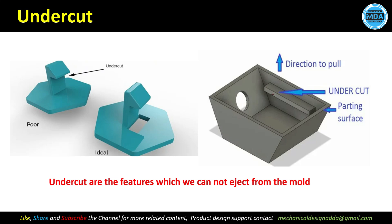This part has a feature called an undercut. In the pulling direction, this is the direction of the mold and this is the hub direction of the mold. This material will get stuck during ejection, making it difficult to remove from the mold. Even after applying a draft, we can't remove this surface — this is called an undercut.